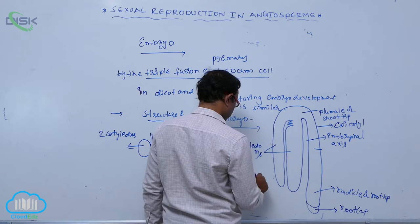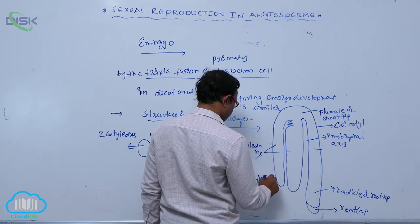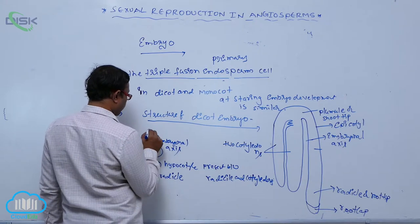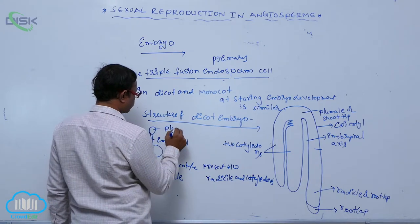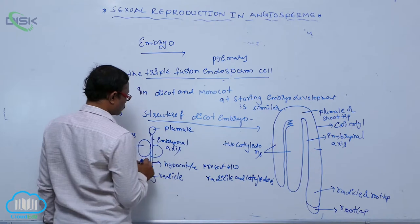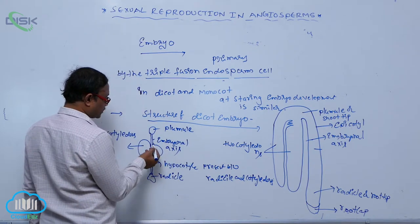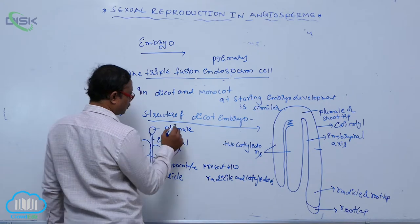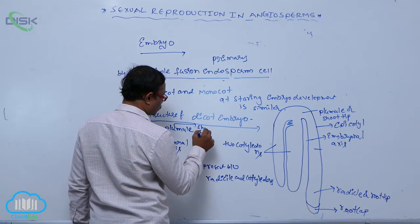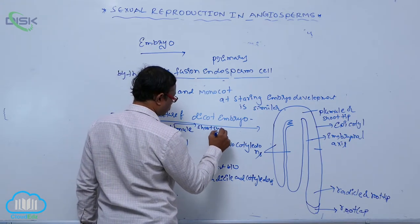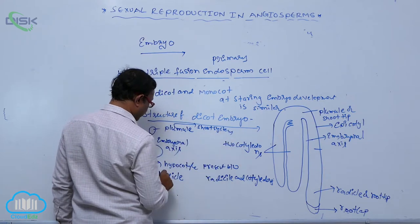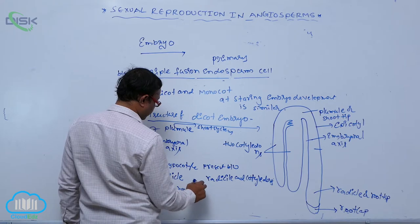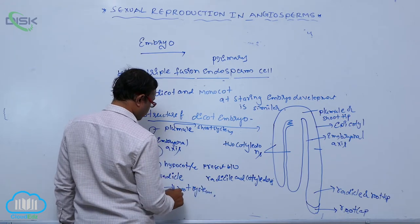Above the cotyledons on the embryonal axis is the plumule. The plumule is converted into the shoot system, and the radicle is converted into the root system at the time of seed germination, forming the primary root.